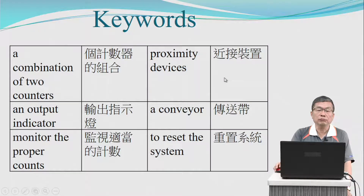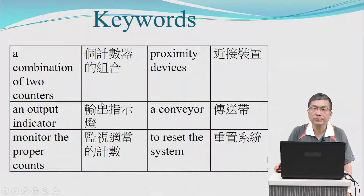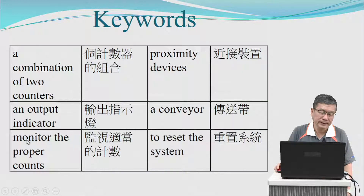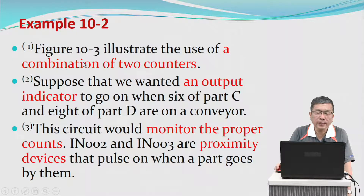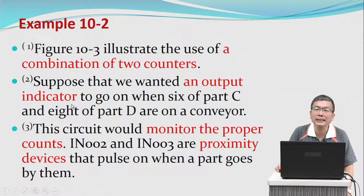Example 2 — the keywords are: a combination of two counters, proximity devices, and an output indicator. Suppose that we want an output indicator to go on when six of part C and a certain number of part D are on the conveyor.